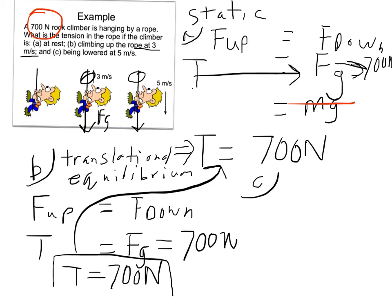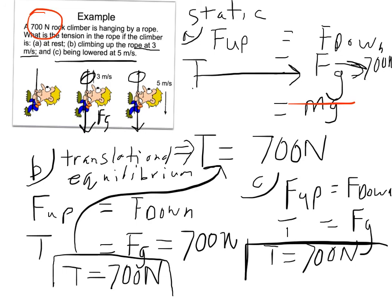Let's try C. Being lowered at 5 meters per second. Okay. Up forces equal down. Tension is up. Weight is down. Oh my goodness, I've seen this before. Weight was 700 Newtons. Therefore, tension is 700 Newtons. How interesting. Whereas Cartman from South Park would say, How interesting and relevant. Alright, that's it for the first video.